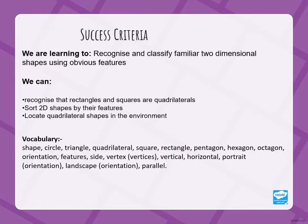Our success criteria include that we recognise and classify familiar two-dimensional shapes using obvious features. We can recognise that rectangles and squares are quadrilaterals, and sort 2D shapes by their features.